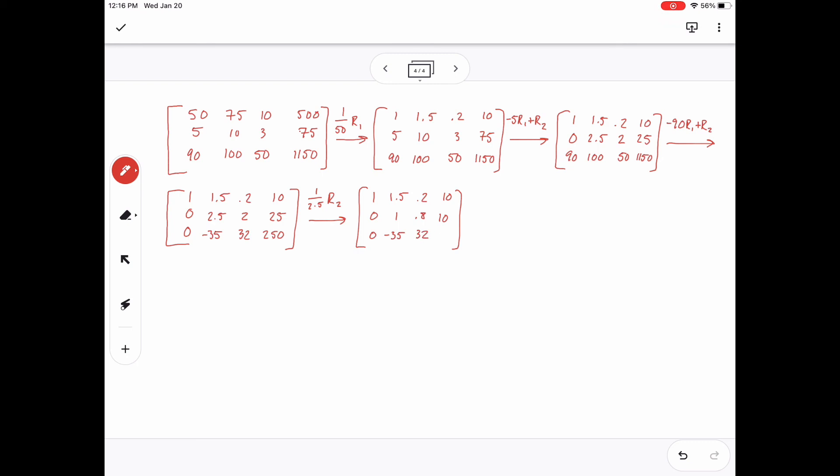Then from there, I want to get the 1.5 to be a 0. So I multiply the second row by negative 1.5, add it to the first row. And then from there, I want the negative 35 to be a 0. So I multiply the middle row by 35 and add it to the third row.